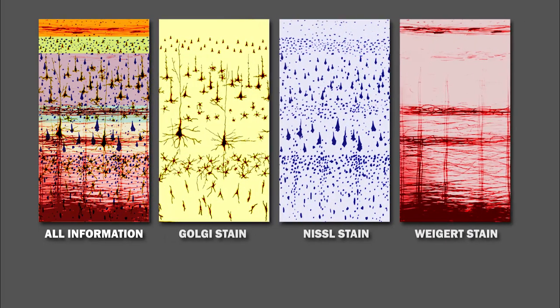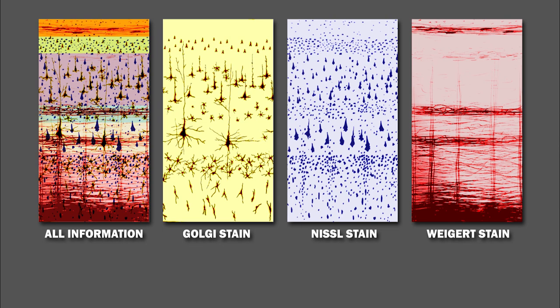The six layers of the cerebral cortex look different depending on which stain is used to observe them, and each stain provides us with different insights into their structure.